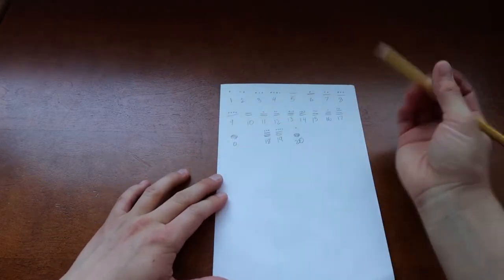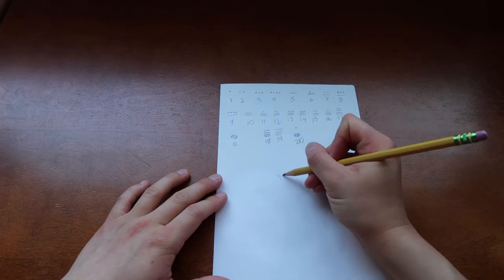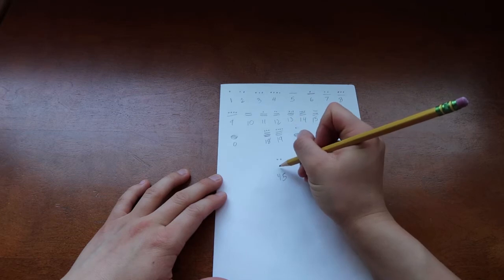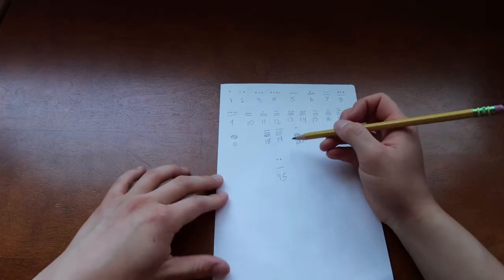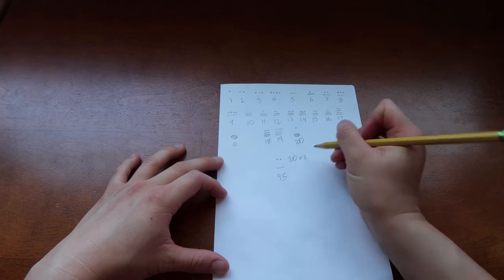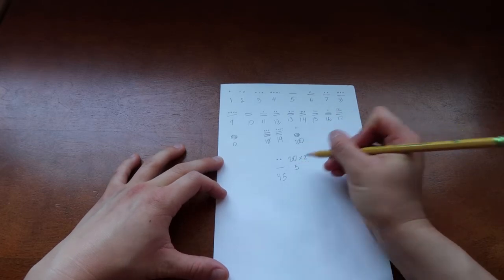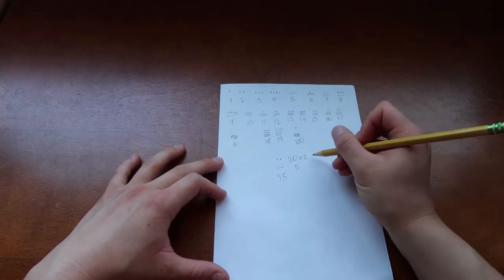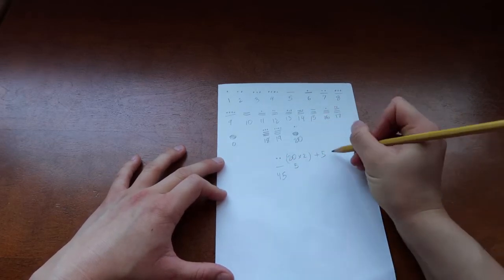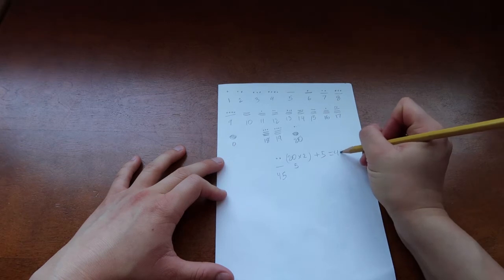So let's write a number like 45. We would have 2 dots and a 5. So basically, this is 20 times 2, and then this is 5. So what we have is 20 times 2 plus 5 equals 45.